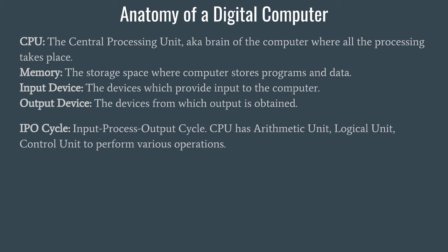The IPO cycle is the Input-Process-Output cycle, which runs from the point the computer is turned on until it is turned off. When we provide input — via mouse, keyboard, joystick, or scanner — the computer must process it, because the input is in human language which the computer cannot understand. That processing from human language to computer language takes place in the CPU, or the OS which resides inside the CPU.